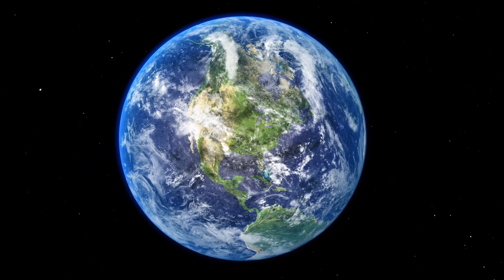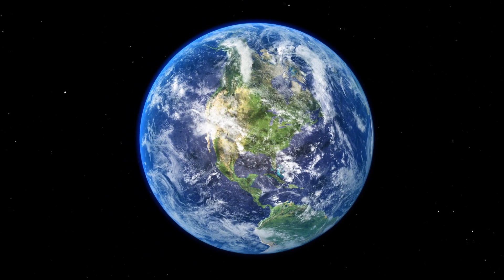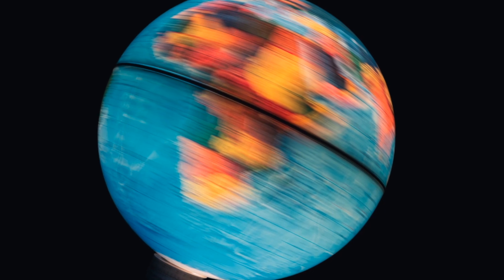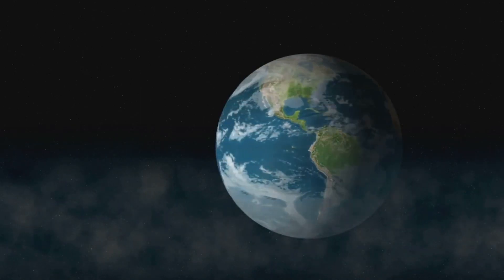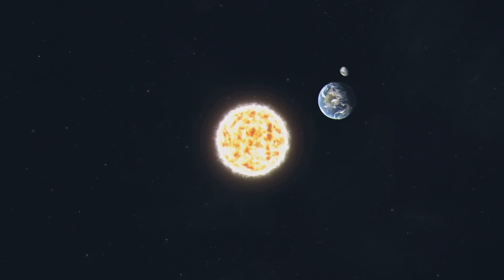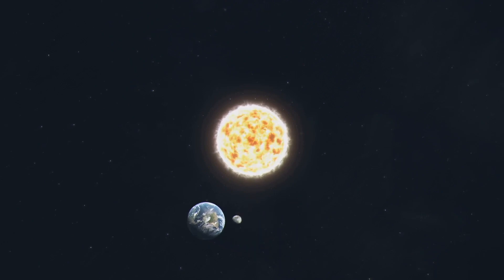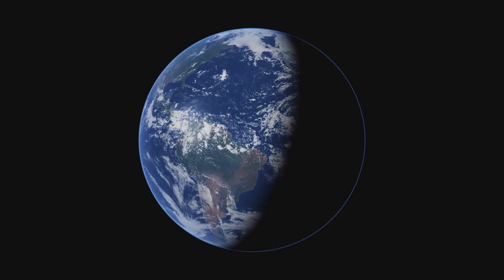The original cloud of gas and dust had a bit of spin to it. As it collapsed to form the sun and the planets, that spin had to be conserved. So, as the cloud got smaller, it spun faster, much like a figure skater pulling in their arms to spin faster on the ice. And so, our earth, born from this spinning disk of material, inherited this rotation. The rotation speed has been gradually slowing down due to gravitational interactions with the moon and the sun, but it's still going, giving us our 24-hour days.